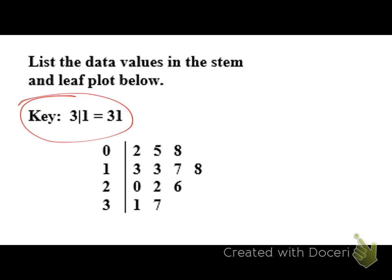Okay. So, we have values of a 2, a 5, an 8, a 13, another 13, a 17, an 18, a 20, a 22, a 26, a 31, and a 37. So, I know I got them all. And there you go. Stem and leaf plots.